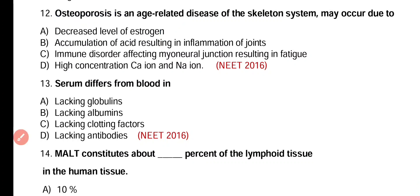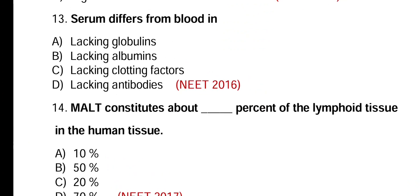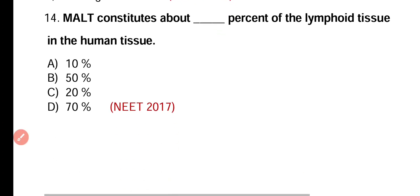Question number 13. Serum is different from blood in lacking: globulin, albumin, clotting factors, or antibodies? Correct answer is option C. Blood has clotting factors while these clotting factors are absent in serum.